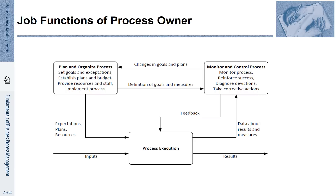The process owner is not working directly in the process, but he or she is responsible for supervising it. On the one hand, a process owner is responsible for monitoring and controlling the process. Furthermore, the process owner is supposed to plan and organize the process. So if the performance is not right, the process owner is responsible for introducing measures and changing the process such that the result is a better process.